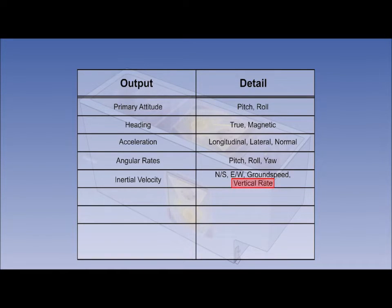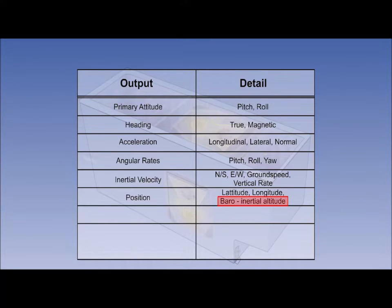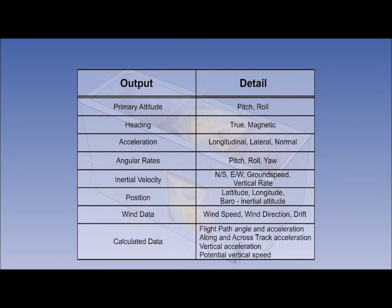However, the IRS also gives baro-inertial vertical rate. The IRS gives latitude and longitude position information, as the INS did, but it also gives baro-inertial altitude. It gives wind speed, wind direction and drift, as the INS did. From this raw data, it calculates various items of secondary data which are used in the flight management system and the electronic flight instrumentation system, both of which we will cover later.